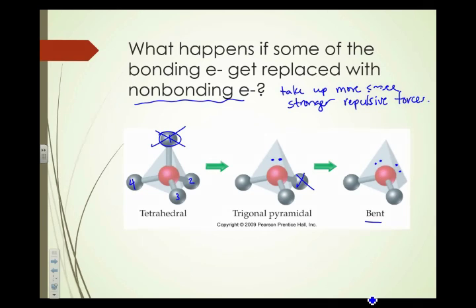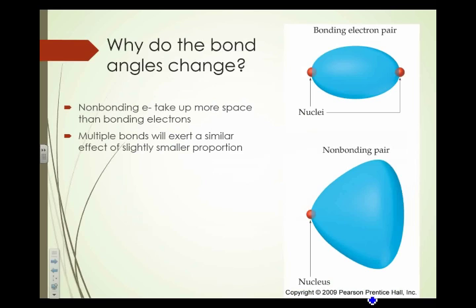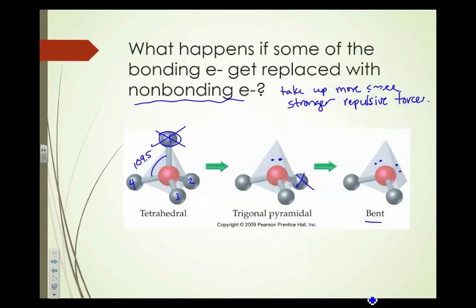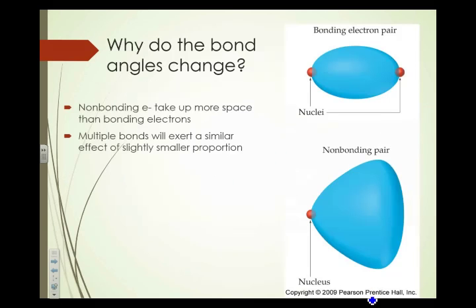So you might recall that tetrahedral started with a bond angle of 109.5 degrees. Let's check out what happens. So those bond angles here, I started with 109.5, they're actually going to get smaller. So this is going to be less than 109.5, and this is also going to be less than 109.5. And in fact, our bent angle will be smaller than our trigonal pyramidal bond angle as well. So why does that occur?